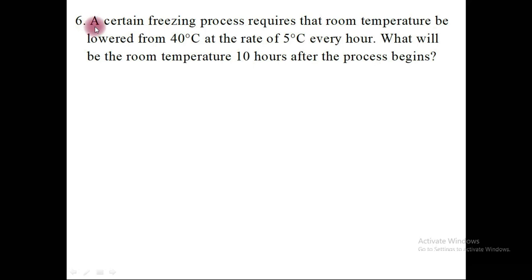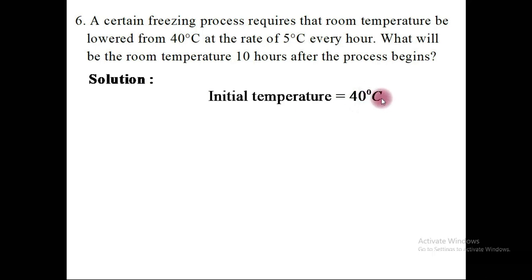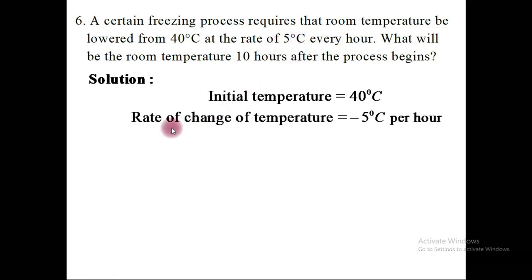Question number 6: A certain freezing process requires that room temperature be lowered from 40 degrees Celsius at the rate of 5 degrees Celsius every hour. What will be the room temperature 10 hours after the processing begins? The initial temperature is 40 degrees Celsius, and the rate of decrease in temperature every hour is 5 degrees Celsius.